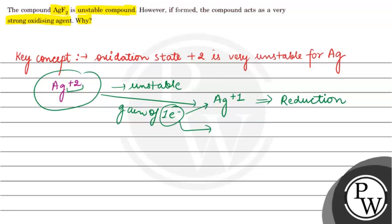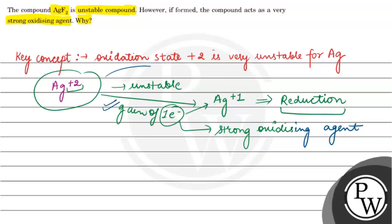That is why AgF2 acts as a very strong oxidizing agent. An oxidizing agent is reduced — it gains an electron. When the other species oxidizes and loses one electron, Ag gains that electron and goes to the +1 state, because the +2 state is unstable. This explains why AgF2 acts as a strong oxidizing agent when formed.